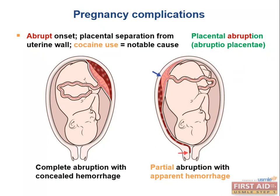The condition proves fatal to the fetus about a third of the time and can cause maternal death in the worst cases. It can also lead to disseminated intravascular coagulation in the mother. During the abruption, you get tissue factor (factor 3) from the placenta into the maternal circulation, which sets off the extrinsic coagulation pathway and converts prothrombin to thrombin. Risk factors include smoking, high blood pressure, or cocaine use. Cocaine is highly tested on step 1 as a cause for placental abruption.